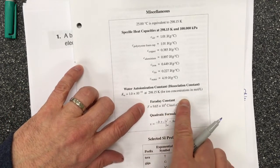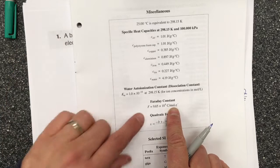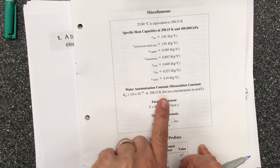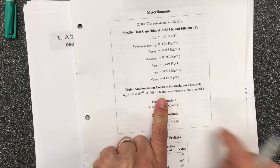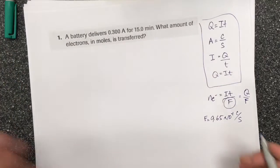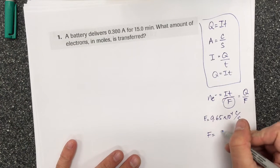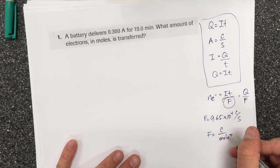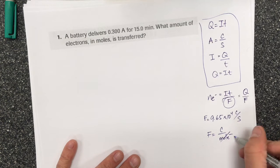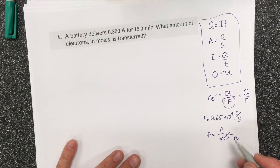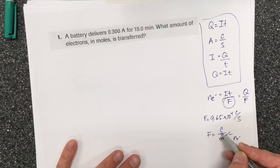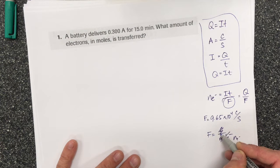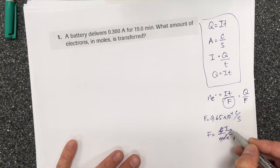And again this doesn't give us a formula, but if we understand that Faraday's constant equals the number of coulombs divided by mole, F equals coulombs per mole of electrons or number of moles of electrons, and that coulombs is the same as I times T.